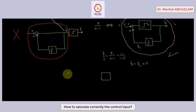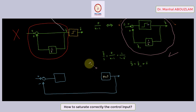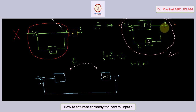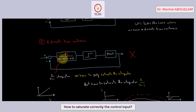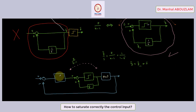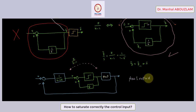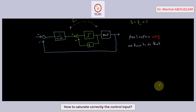Going back to our closed loop: we have to put the integrator apart because we have to saturate just the integrator. As we already explained, we will consider this block diagram in order to saturate the integrator. So I consider this block diagram for the integrator, and the rest I put here. Like that, I can saturate just the integrator. Now I will explain why we have to saturate just the integrator when we have a controller that contains an integrator.